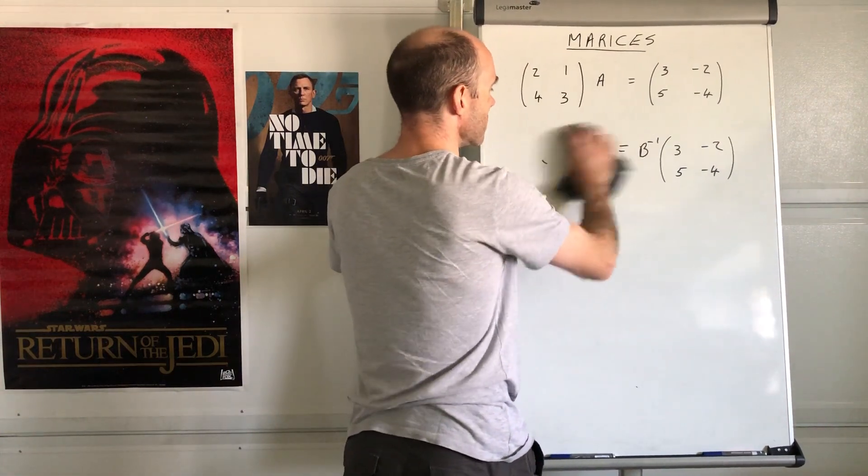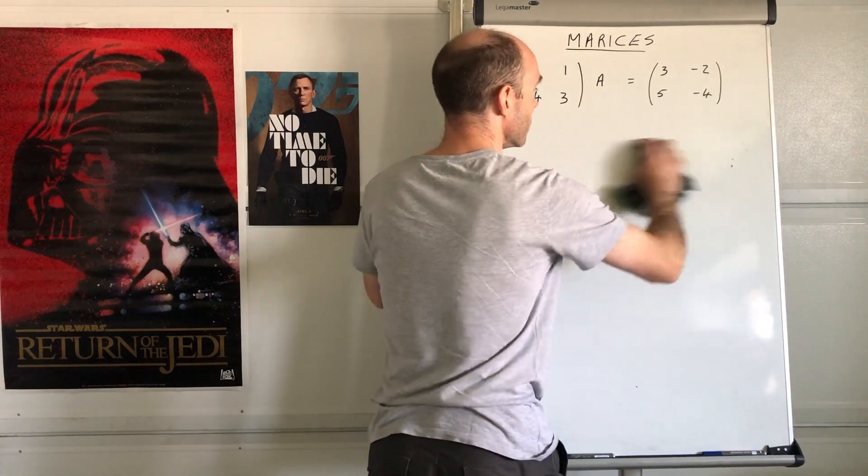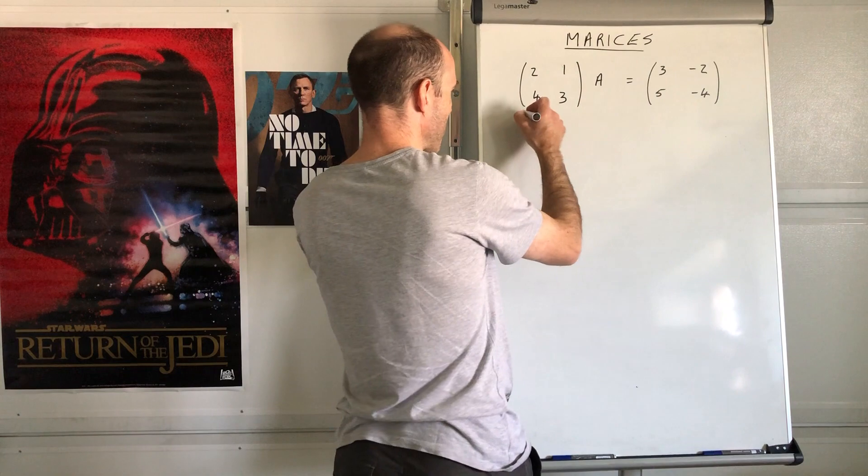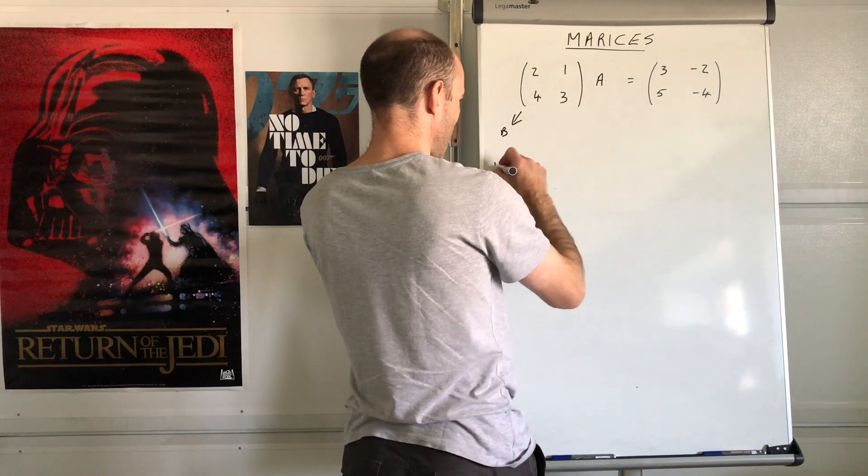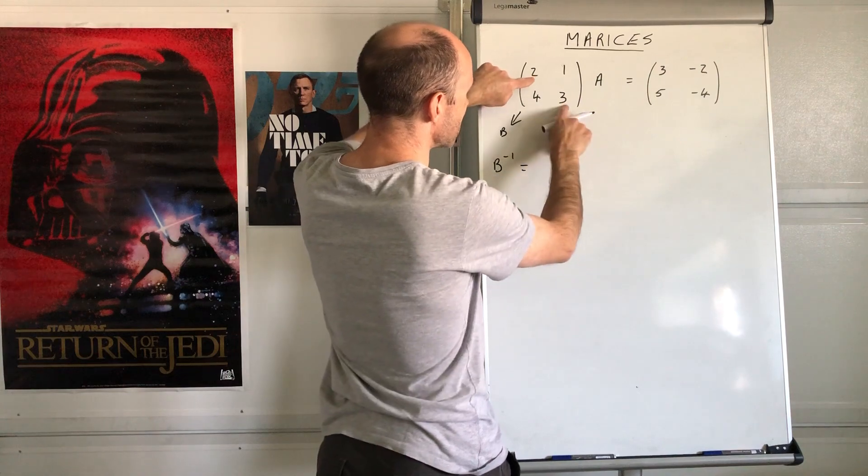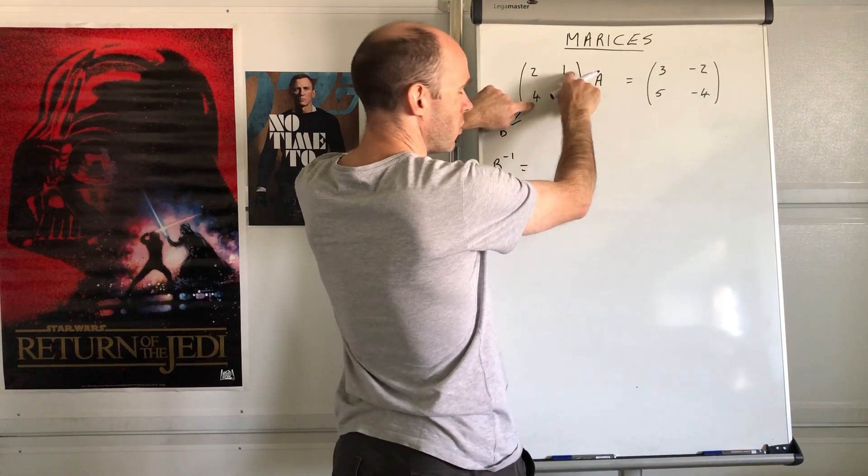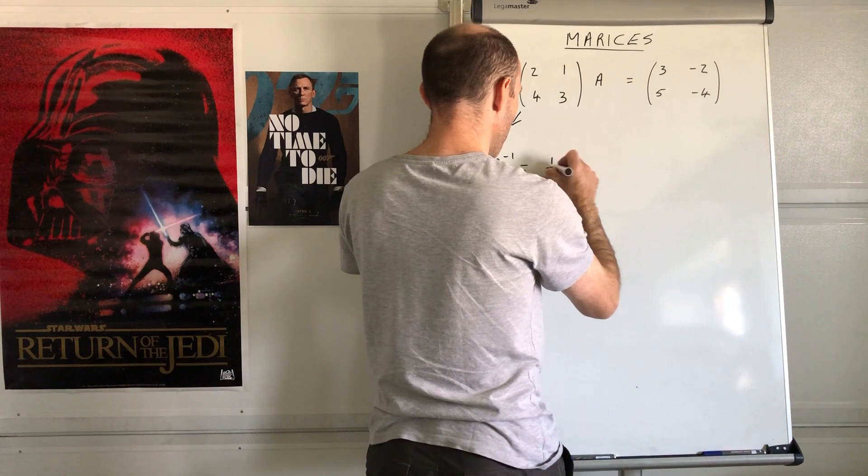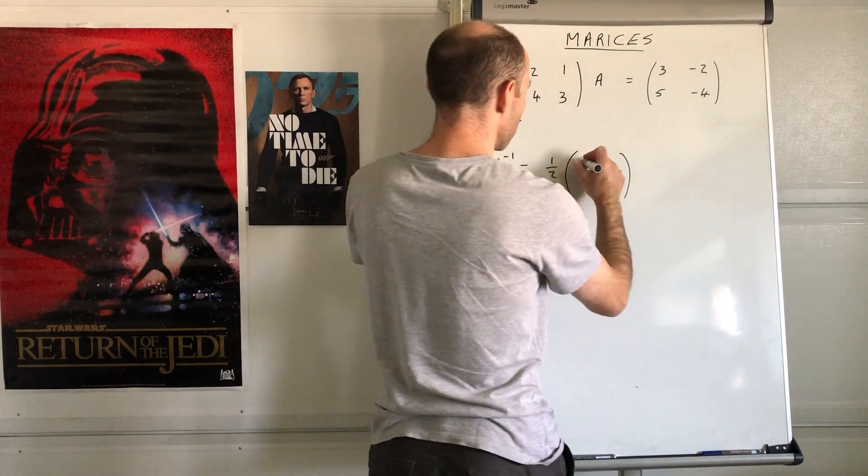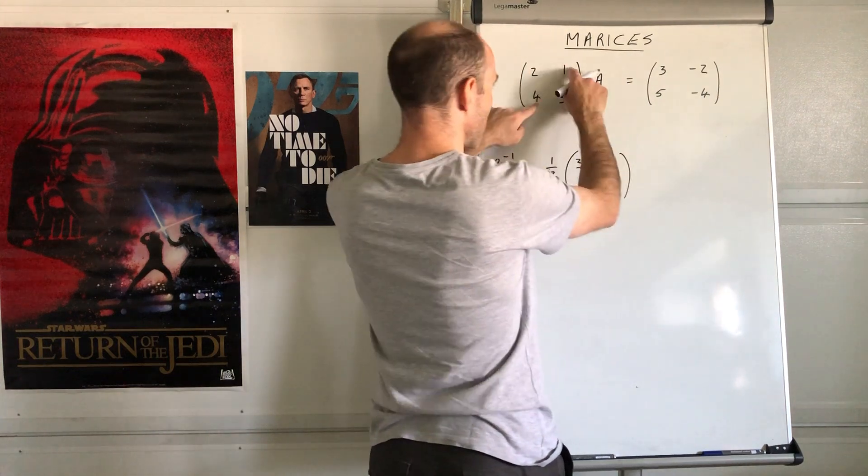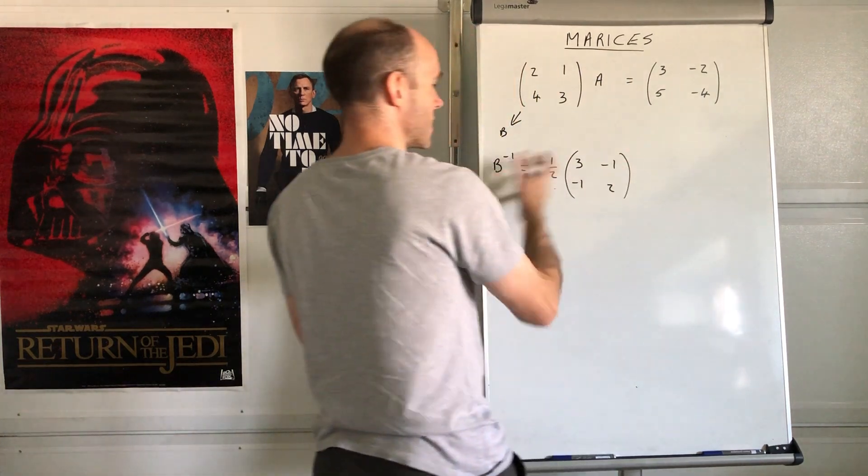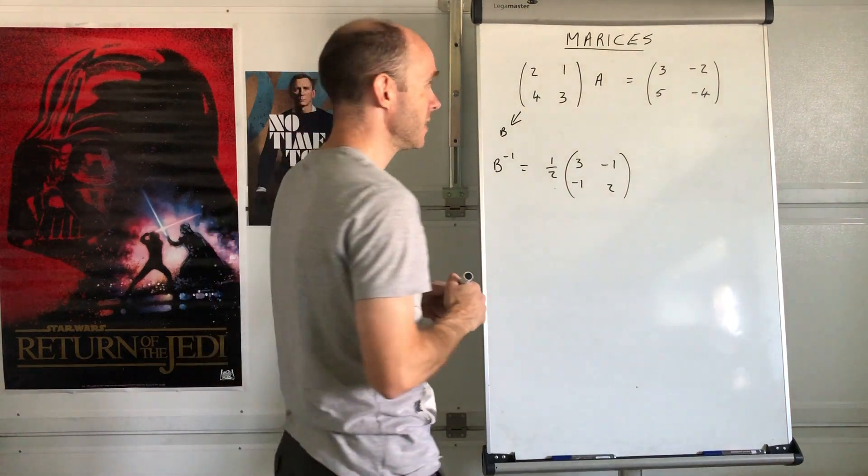So our method is going to be to work out what the inverse of that matrix there is going to be. So if I call that matrix B, let's write down the inverse of B. So the determinant is going to be 6 subtract 4, which is 2. So you can start with 1 over 2, and then what do we do? We swap those two around, so it's going to be 3 and 2. Multiply those by negative 1, so negative 1, negative 1 like that.